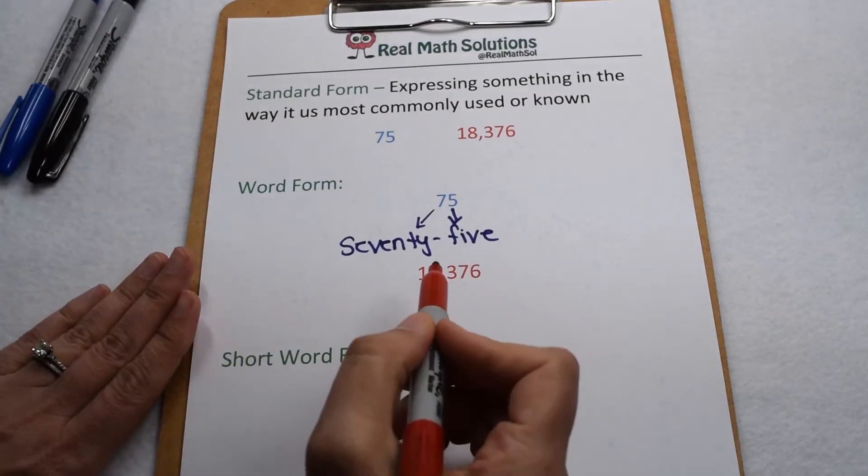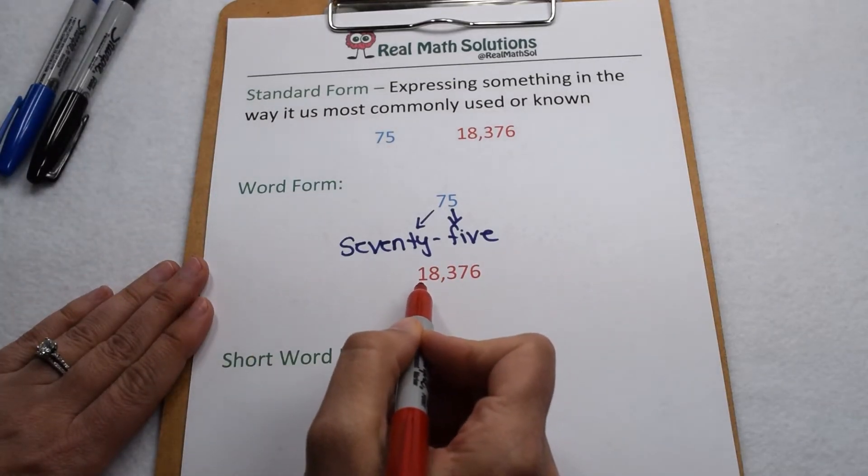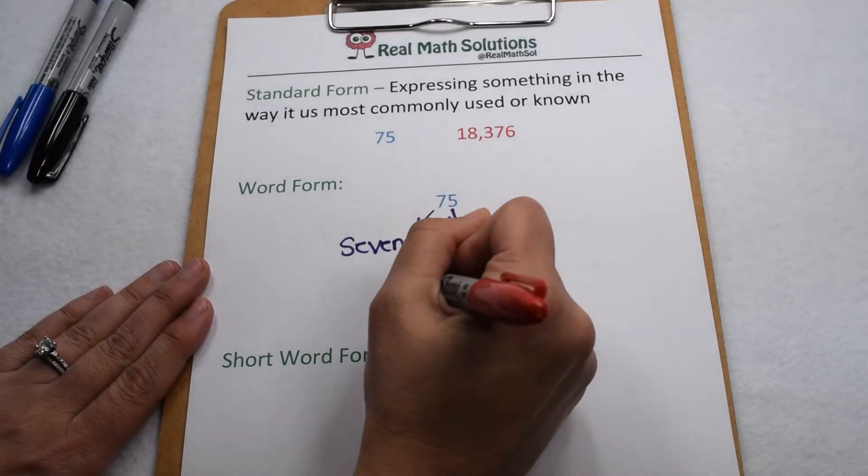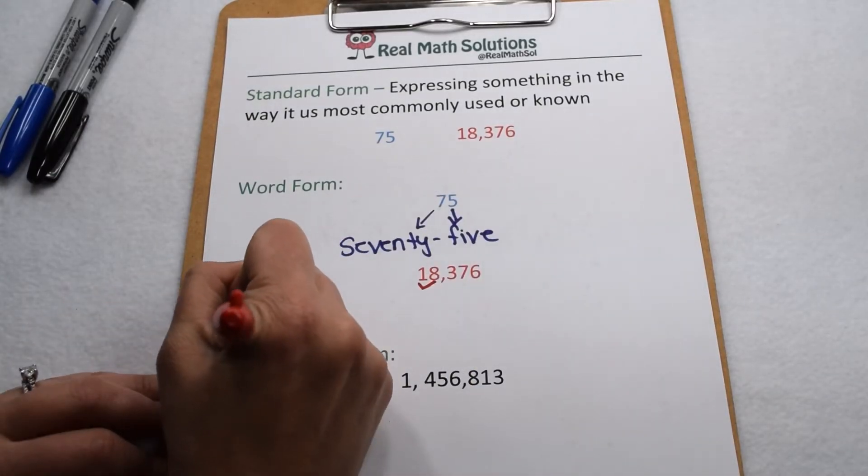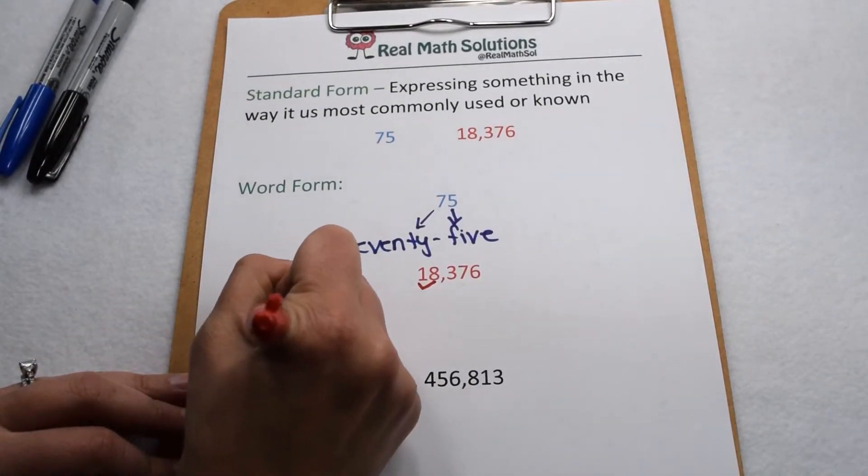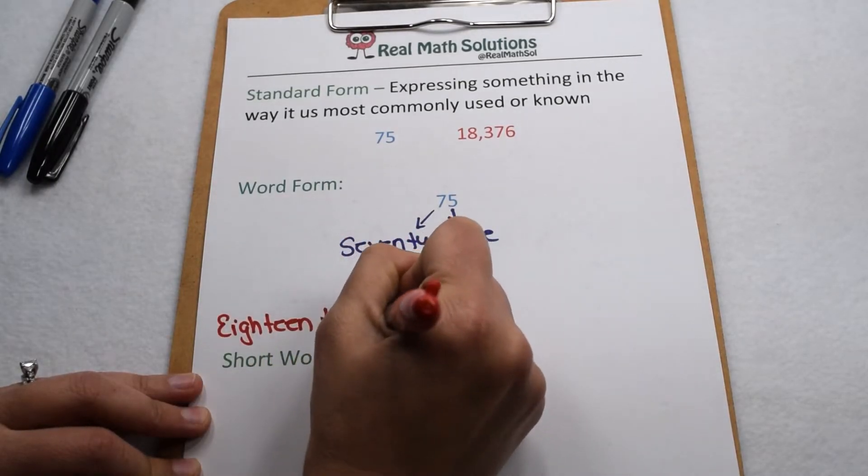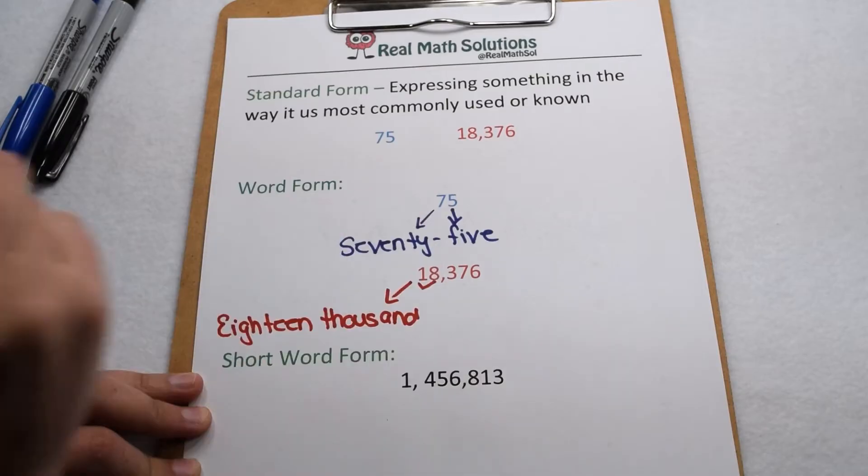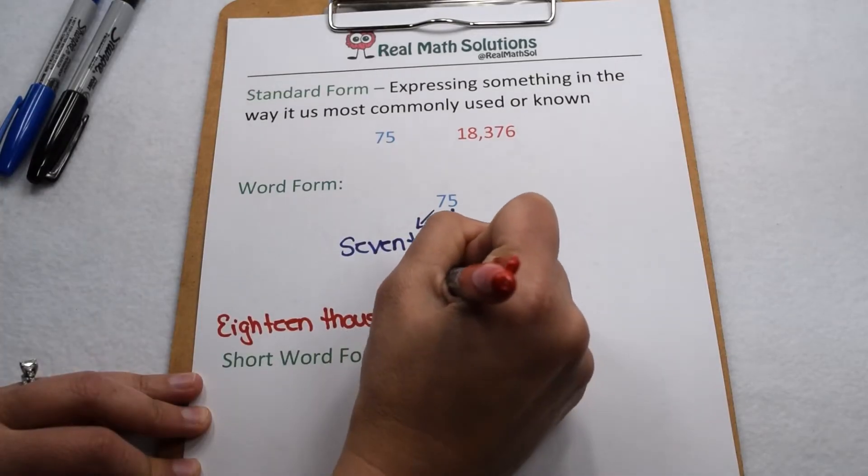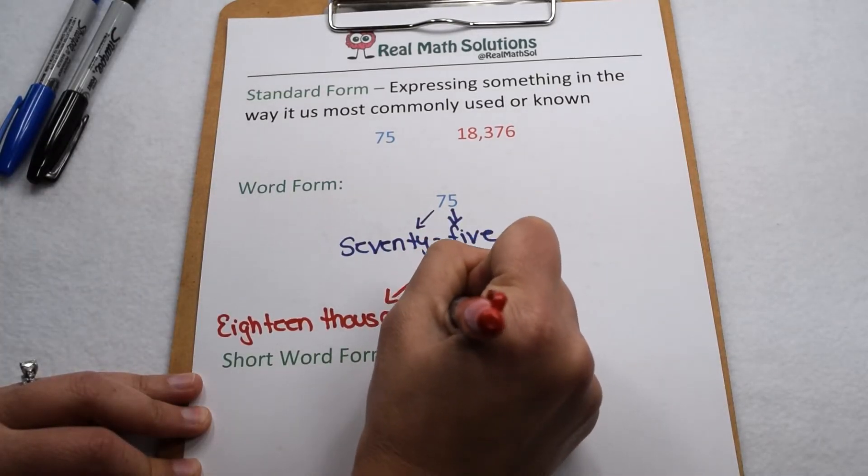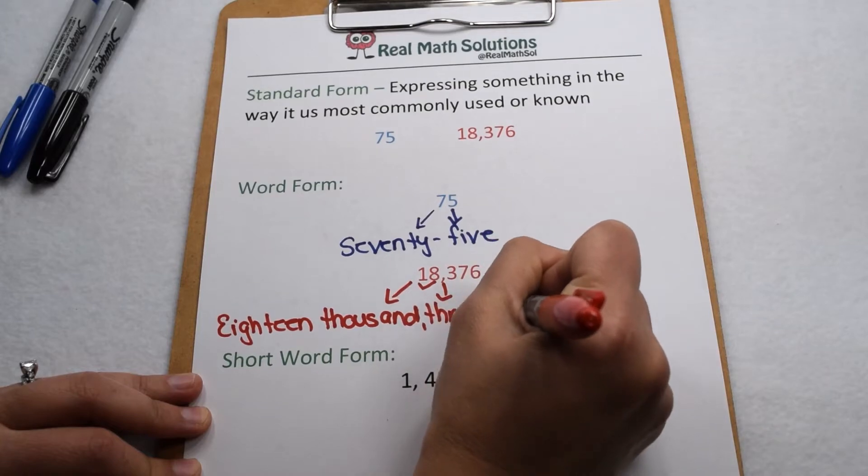The same is true for larger numbers. In word form, we have 18,376. So to write that out in word form, we would start with the 18. And since it's in the thousand spot, we would then follow with the thousand. So here we have 18,000. 3 is in the 100 spot, so we would write out the 3, followed by 100.